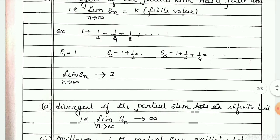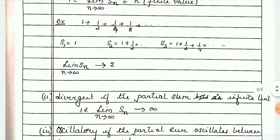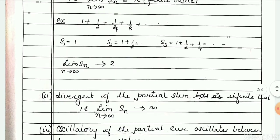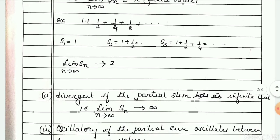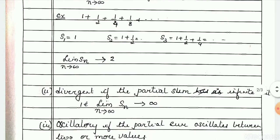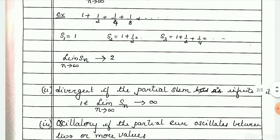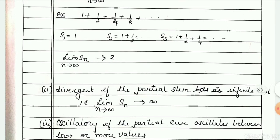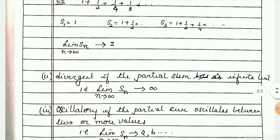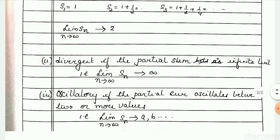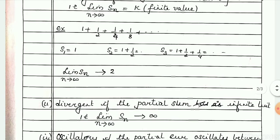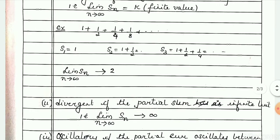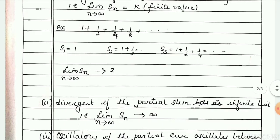Take the example: 1 plus 1/2 plus 1/4 plus 1/8 plus and so on. s1 equals 1, s2 equals 1.5, s3 equals 1.75. As you work out further sums, as n tends to infinity the values are slowly approaching the value 2 — it doesn't go beyond 2. So we say this infinite series tends to the finite value 2, and therefore this infinite series is convergent.